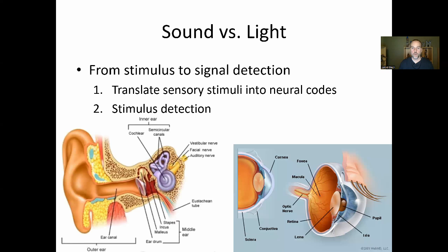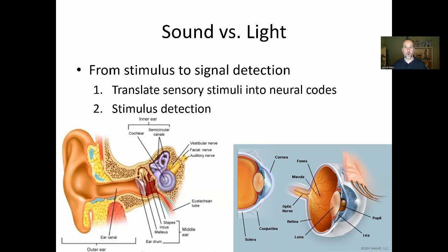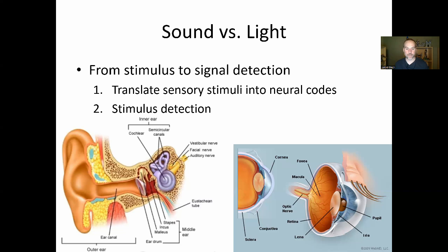There are two steps during stimulus identification. First, we have to translate the sensory stimuli into neural codes — the light turning on must be translated from a physical stimulus into neural codes in our brain. Second, once translated, our brain has to detect: okay, what just happened in the world? Once we do that, we can respond, such as pressing a button in a reaction time task. We'll look at both of these processes for sound versus light.